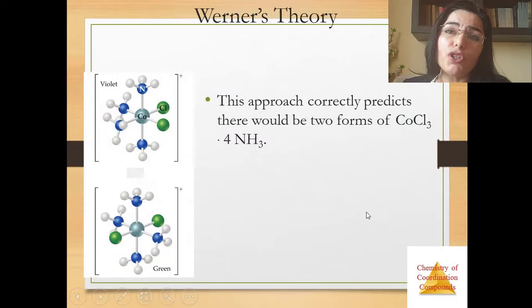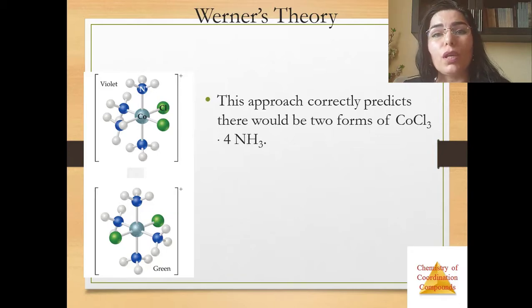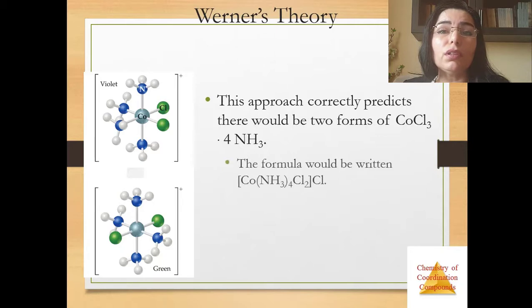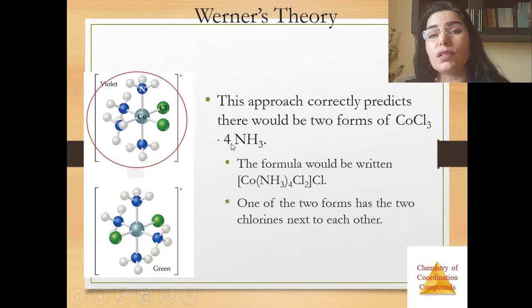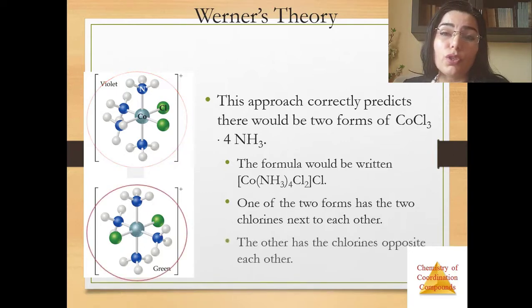This approach correctly predicts there would be two forms of cobalt chloride with four ammonia molecules. The formula would be written like this and one of the two forms has two chlorines next to each other. The other has the chlorines opposite each other.